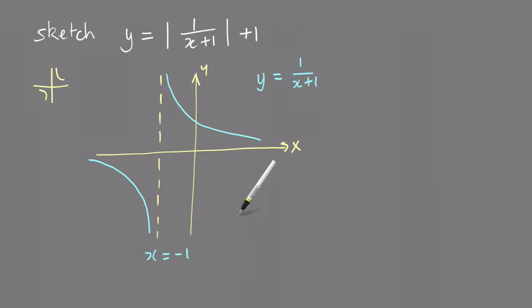And now the next thing I want to do is take the absolute value of that. What will happen is that this bit here will be reflected in the x-axis and go up there like that. So I'll do that for you now.